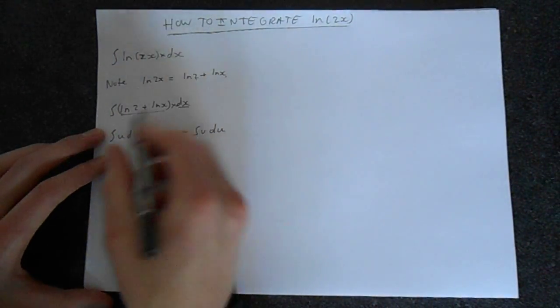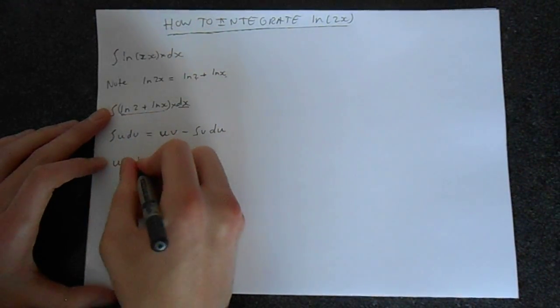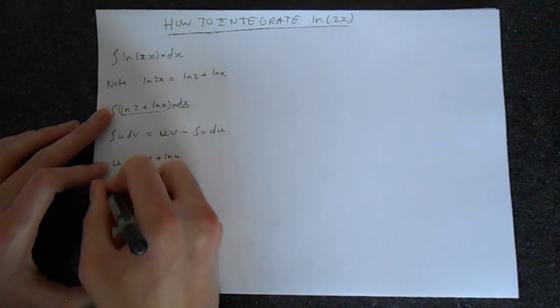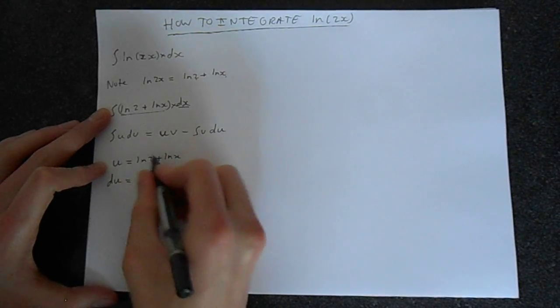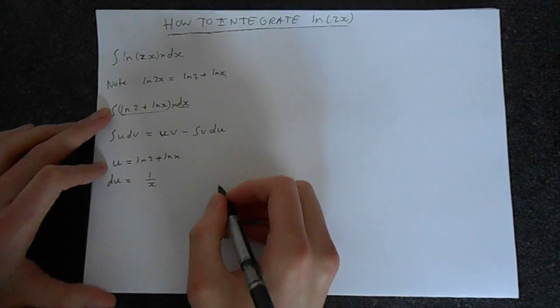Now, we want to make this as simple as possible. So if we choose u equal to ln2 plus lnx, the derivative of this, which we're going to call du, is just going to be 1 over x. The derivative of ln2 is nothing, this is just a number. And we should know that the derivative of lnx is 1 over x.